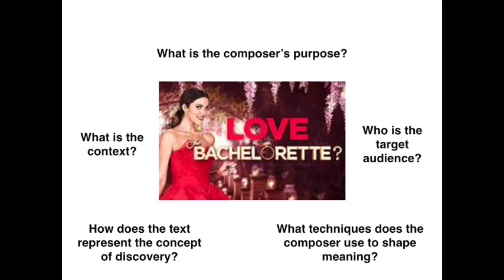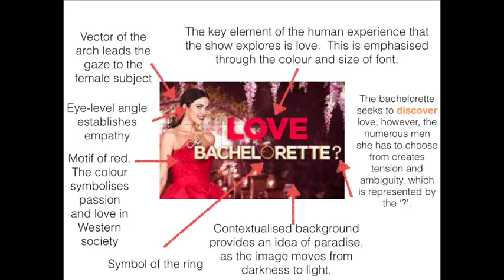The composer's purpose is to convince viewers to watch The Bachelorette. The target audience is Australians, and I suspect there would be a specific target demographic — age, gender, etc. The context is Western for both the composer and the viewer. The text represents the program as a journey of discovery, and the characters will use the word 'journey' until they're blue in the face. Now, the techniques the composer has used — I think you need to aim to have identified six techniques in a 30-second view of a visual text. Where you're going to score marks in your short responses and essays is in your analysis of these techniques. You need to be judicious in your selection, which means you need to choose to analyse the techniques that allow you to answer the question.